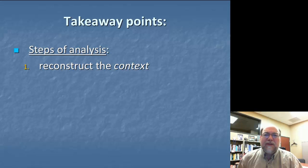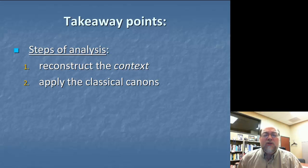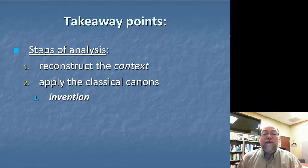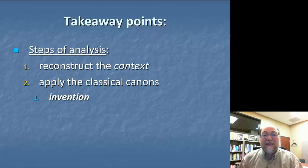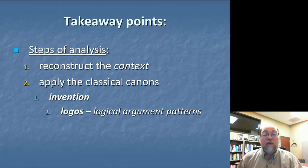We talked about some different perspectives for how we might understand rhetorical context. In the second installment in the series, we introduced the idea of applying the classical canons of rhetoric: invention, arrangement, style, memory, and delivery. We focused particularly on the canon of invention, which is focusing on how the substantive arguments and primary rhetorical content and appeals are constructed in a message. We emphasized the proof of logos, what Aristotle refers to as logical argument patterns.